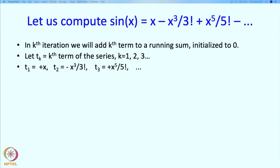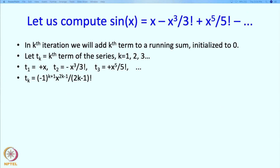We can write T_k as (−1)^(k+1) · x^(2k−1) / (2k−1)!. Why k+1? If I wrote (−1)^k, then for k=1 it would give a negative number, so (−1)^(k+1) ensures signs alternate correctly. For k=1 this gives x¹/1!, for k=2 we get 2k−1 = 3, giving x³/3!, and so on. So T_k is indeed this formula.